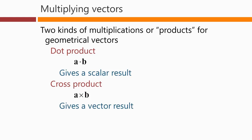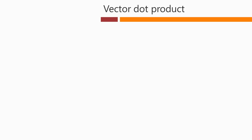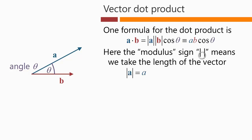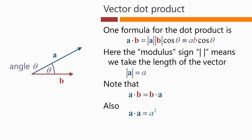Let's look first at the vector dot product. The formula is: A dot B equals the modulus of A — which is the length of A — times the modulus of B — the length of B — times the cosine of the angle between them, or equivalently AB cosine theta. The modulus notation means we take the length of the vector. Note that A dot B equals B dot A, so the dot product is commutative.